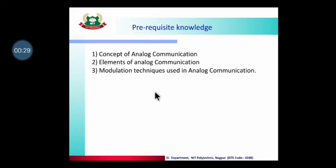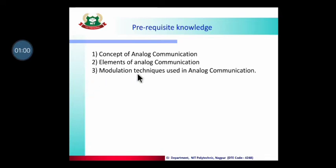To cover this topic, it is necessary to have some prior knowledge. In the previous semester you have completed analog communication, so you should know what analog communication means, what elements it has — the block diagram includes signal, transmitter, channel, receiver, and destination — how noise is added, and the modulation techniques AM, FM, and PM used in analog communication.